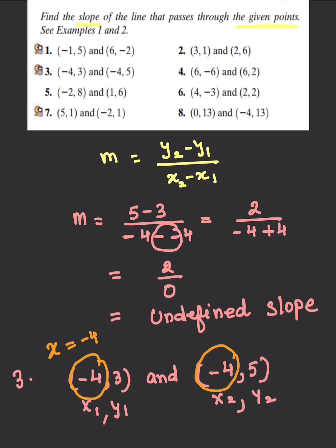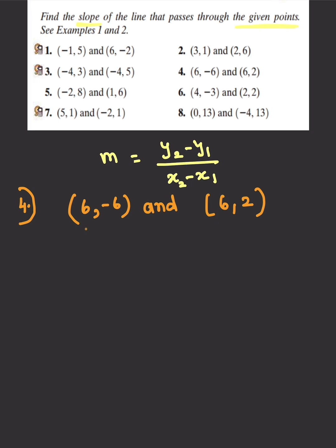Let's try another question. I can already see that the x values are same, so when you put the values in the formula, put your coordinates in the formula, you will see that you will again get an undefined slope.